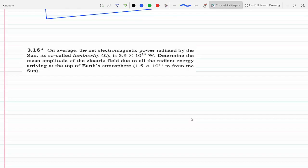Right, so they're saying the net electromagnetic power radiated by the Sun, the luminosity. That is the total power. And if we have the distance, we could figure out the irradiance.